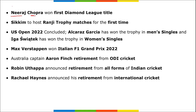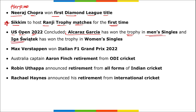Neeraj Chopra, also known as the 'Golden Boy' from Haryana, won the first diamond league title — making him the first Indian to win the diamond league title. He is related to javelin throw in athletics and did not participate in the Commonwealth Games. Sikkim will host Ranji Trophy matches for the first time. In the US Open 2022, Caspar Ruud won the men's singles and Iga Świątek won the women's singles title.